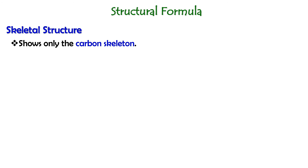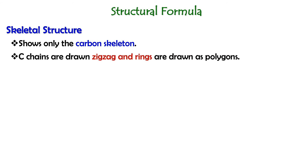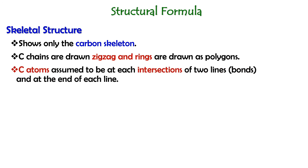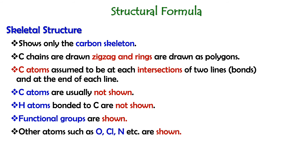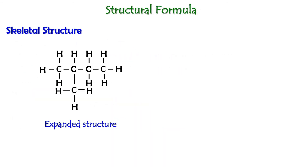Now let's look at skeletal structure. The skeletal structure shows only the carbon skeleton, where carbon chains are drawn zigzag and rings are drawn as polygons. Carbon atoms are assumed to be at each intersection of two lines (bonds) and at the end of each line. Carbon atoms are usually not shown, and hydrogen atoms bonded to carbon are not shown either. Functional groups are shown, and other atoms such as oxygen, chlorine, nitrogen, and so on are shown in the skeletal structure.